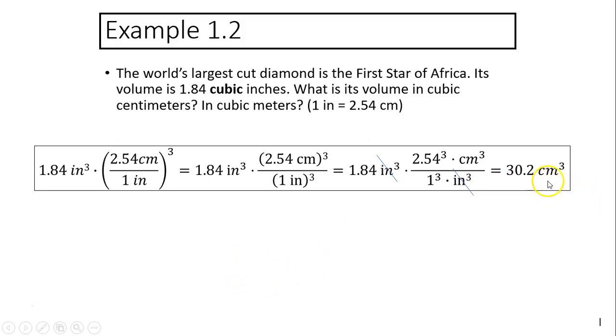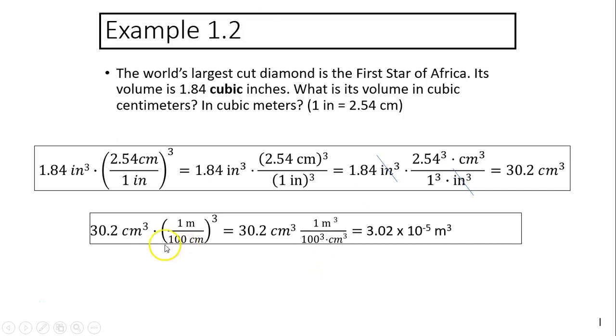Next one: how do we convert this to meter cubed? To convert centimeter cubed to meter cubed, we use the similar idea. We know 1 meter equals 100 centimeters, so you'll have to cube the whole thing. So after you cube the whole thing, it's 1 meter cubed.